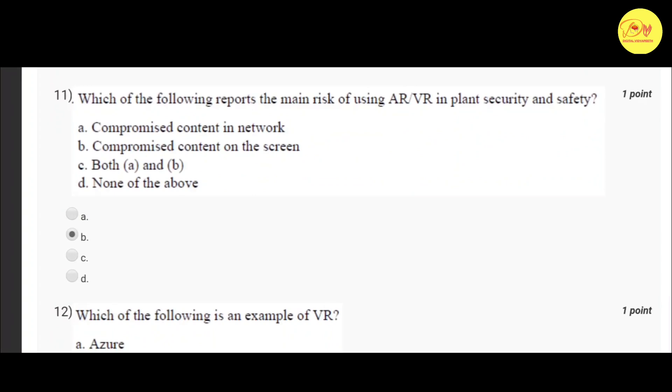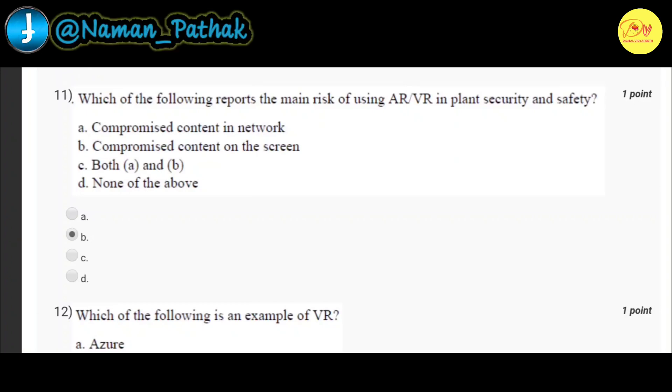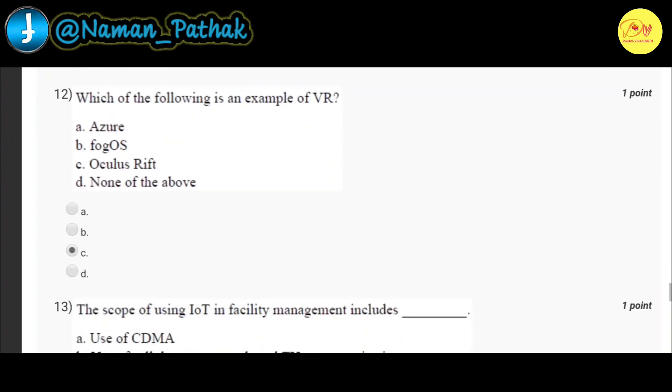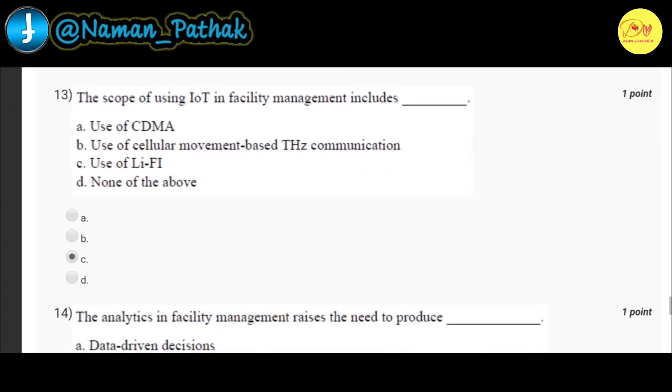Our 11th question is: Which of the following reports the main risk of using AR-VR in plant security and safety? Correct option is B, compromised content on the screen. Our 12th question is: Which of the following is an example of VR? Correct option is C, Oculus Rift. Our 13th question is: The scope of using IoT in facility management includes? Correct option is C, use of Li-Fi.